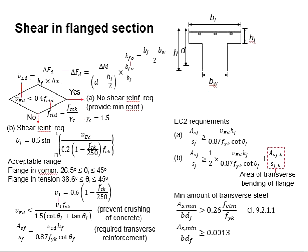This slide shows the equations used to design for shear in the flanged sections. It basically consists of three main parts. First is to determine whether the transverse reinforcement is required within the flank section.